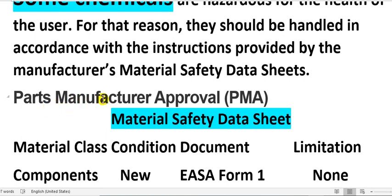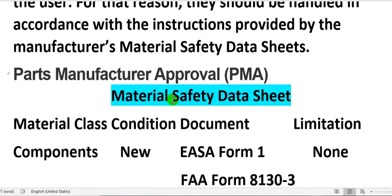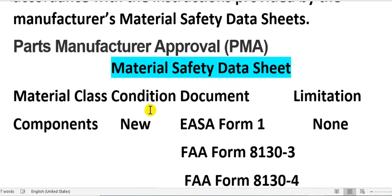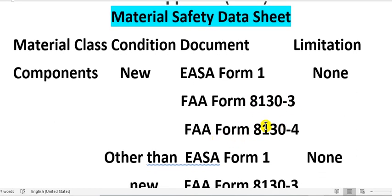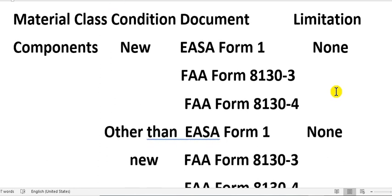PMA stands for Parts Manufacturer Approval. The material safety data sheet is used for material class. For component condition: if new, the document must be an EASA Form 1 or FAA 8130-3 form. You write the limitation here; if there is no limitation, write 'none'.